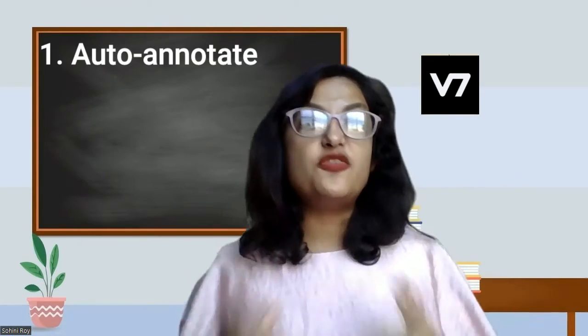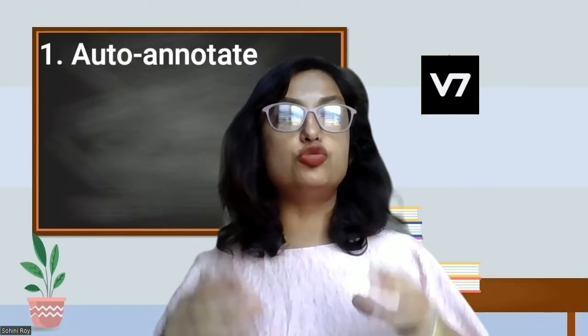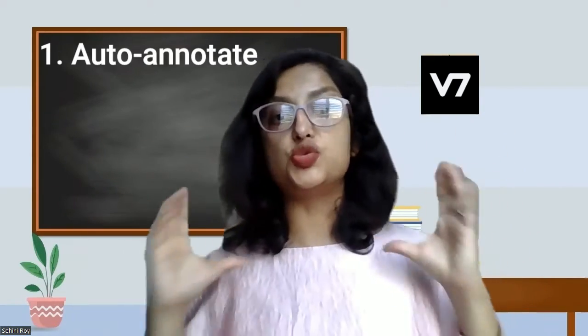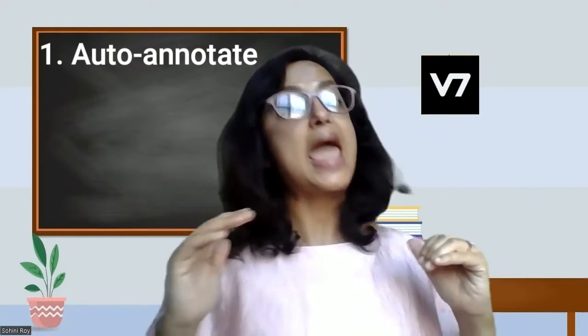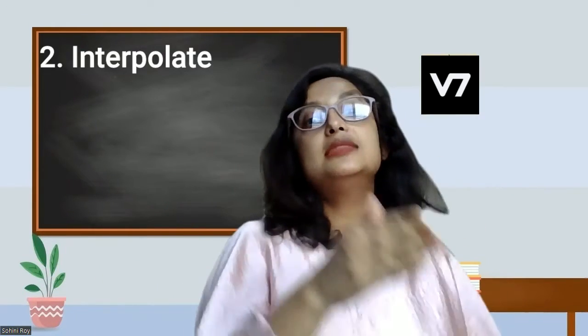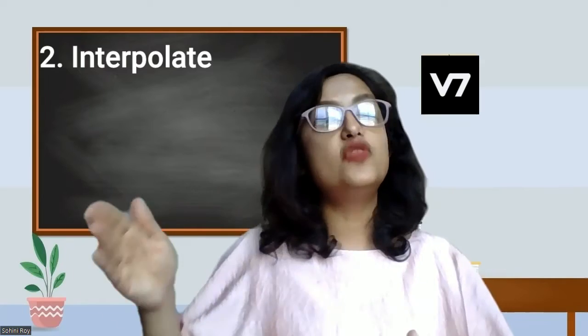Hello everyone and welcome to AI with Sohini. Today we are going to be exploring the software called V7, an online platform. The specific functionality is called auto annotate, which allows you to automatically generate annotations for regions within a selected region of interest. We will also look at the interpolate functionality that carries over these annotations across frames.